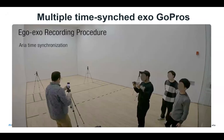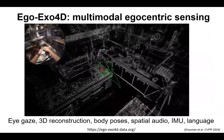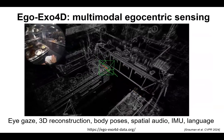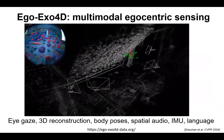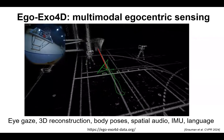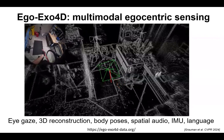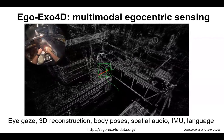The egocentric device is the ARIA glasses, a glasses form-factor device that includes an RGB camera, SLAM cameras, two eye-tracking cameras to give gaze of the camera wearer, seven microphones to provide spatial audio, as well as sensors like IMU, barometer, and magnetometer. The exo cameras are GoPros on tripods, all time-synced with the ARIA, using a lightweight and fast calibration process that is shared as part of the dataset. The reconstructed camera poses, gaze, spatial audio, and body poses are all available.